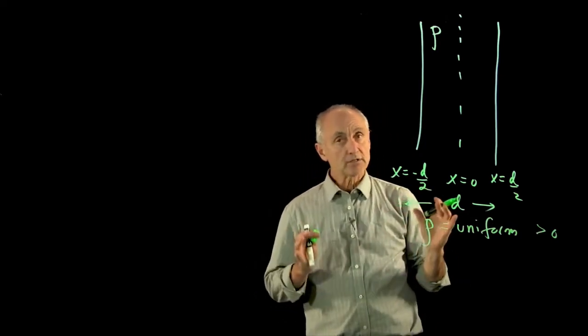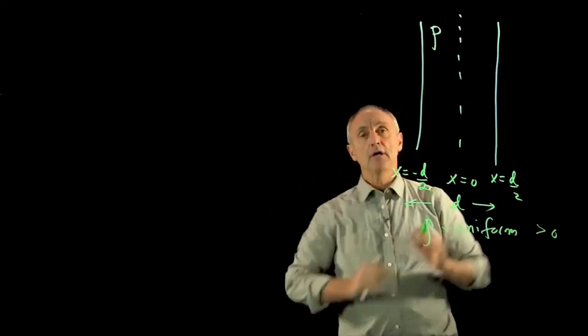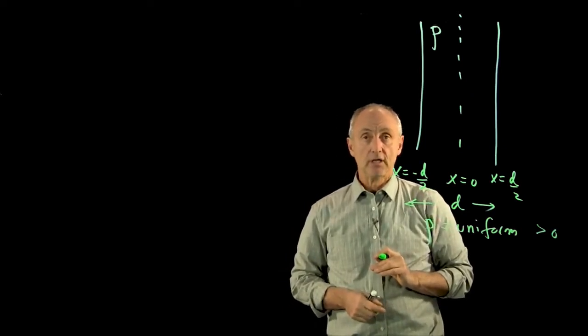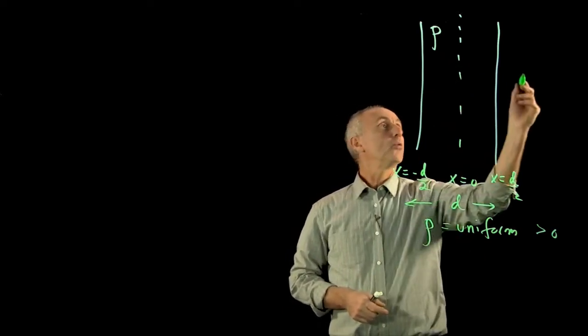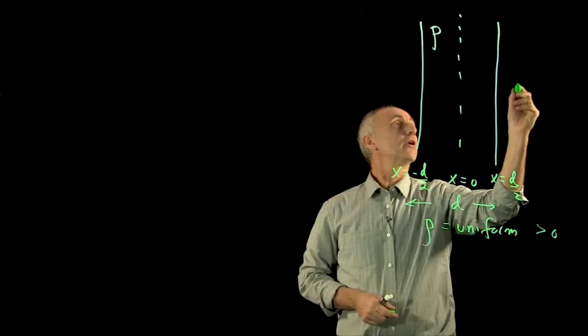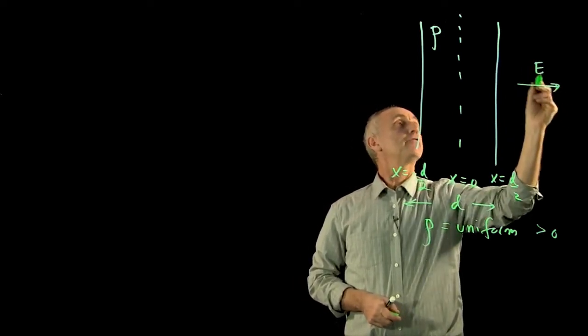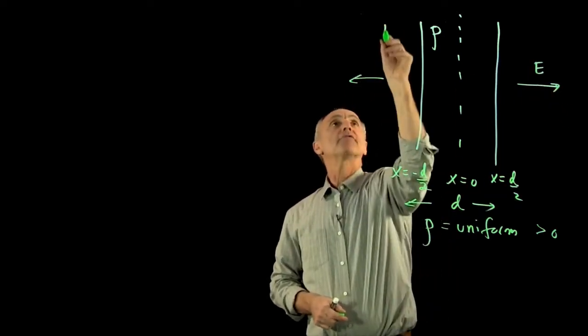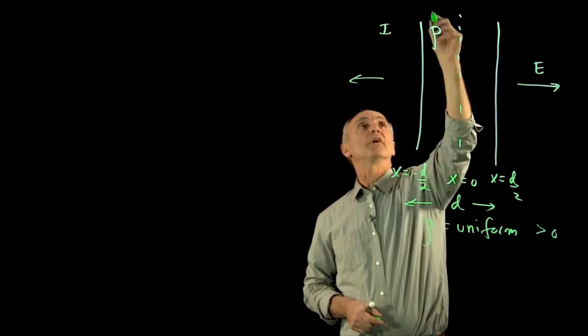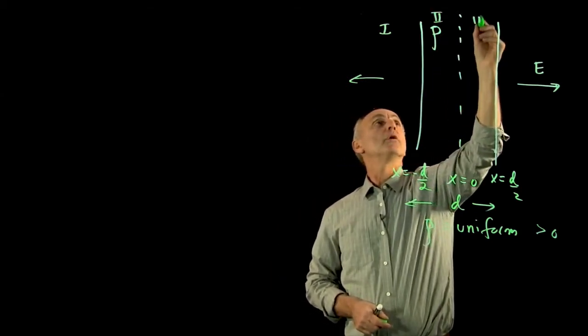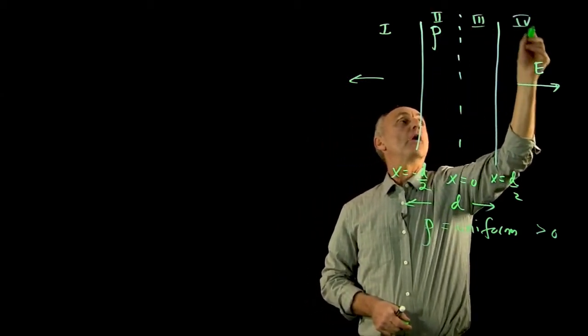Now, just like because a slab has the same planar symmetry as a sheet, we know that the electric field will point away from the slab. And we actually have four regions here: one, two, three, four.